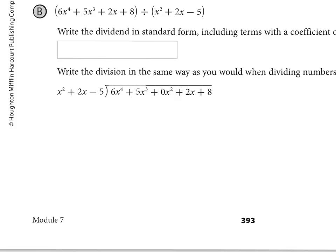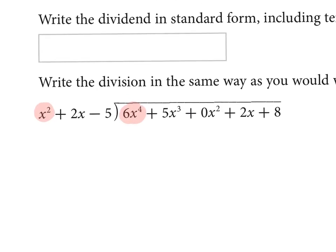Looking at page 393, they have another problem already set up. Notice they've added in 0x² for us — so we didn't have to think about it. That's convenient. If that 0x² weren't there, things just wouldn't line up well, and when they line up well the math is easier to organize. The first thing to figure out: how many times does x² go into 6x⁴? Or in other words, what is 6x⁴ divided by x²? It's 6x².